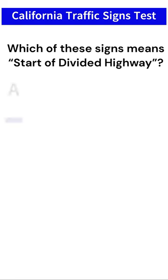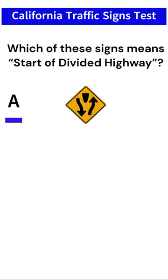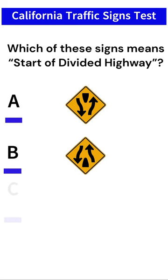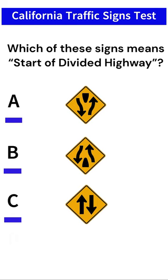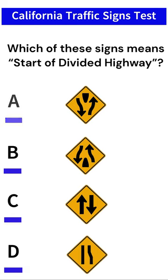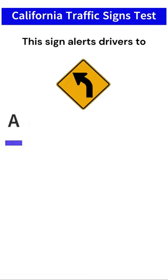Which of these signs means start of divided highway? Sign A, sign B, sign C, or sign D? Answer: sign A.